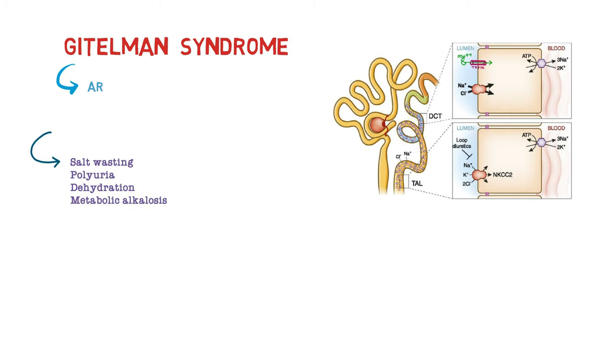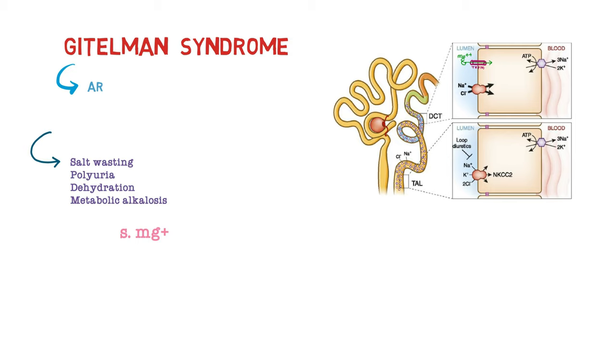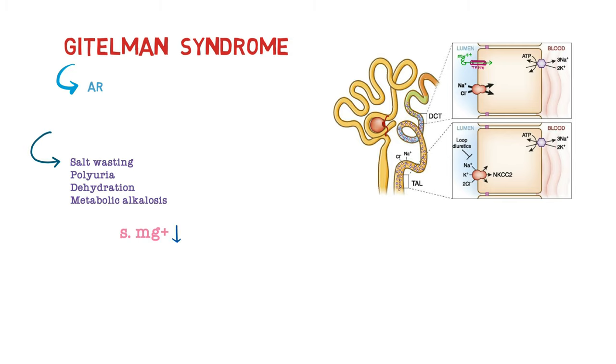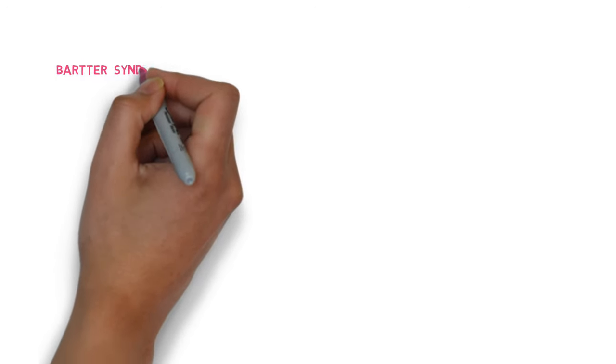But in addition, here there is severe magnesium wasting causing serum magnesium levels to decrease. Now, we can always clear the confusion by remembering the differences among these disorders. So let's summarize these disorders by differentiating them.